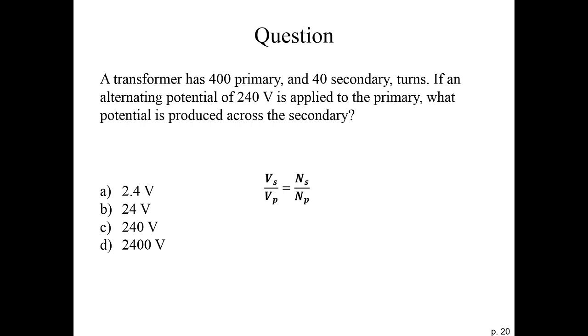So we know that the voltage of the secondary divided by the voltage of the primary is equal to the number of loops around the secondary divided by the loops around the primary coil. We want to know the secondary voltage, so we can multiply both sides by the voltage primary and isolate the secondary voltage. The secondary voltage is the number of secondary turns divided by the number of primary turns times the primary voltage.